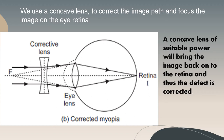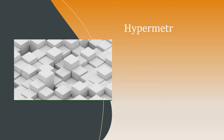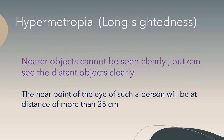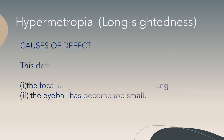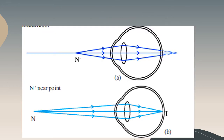Hypermetropia, or long-sightedness: nearer objects cannot be seen clearly, but distant objects can be seen clearly. The near point of such a person will be at a distance of more than 25 centimeters. This defect arises either because the focal length of the eye lens is too long or the eyeball has become too small.